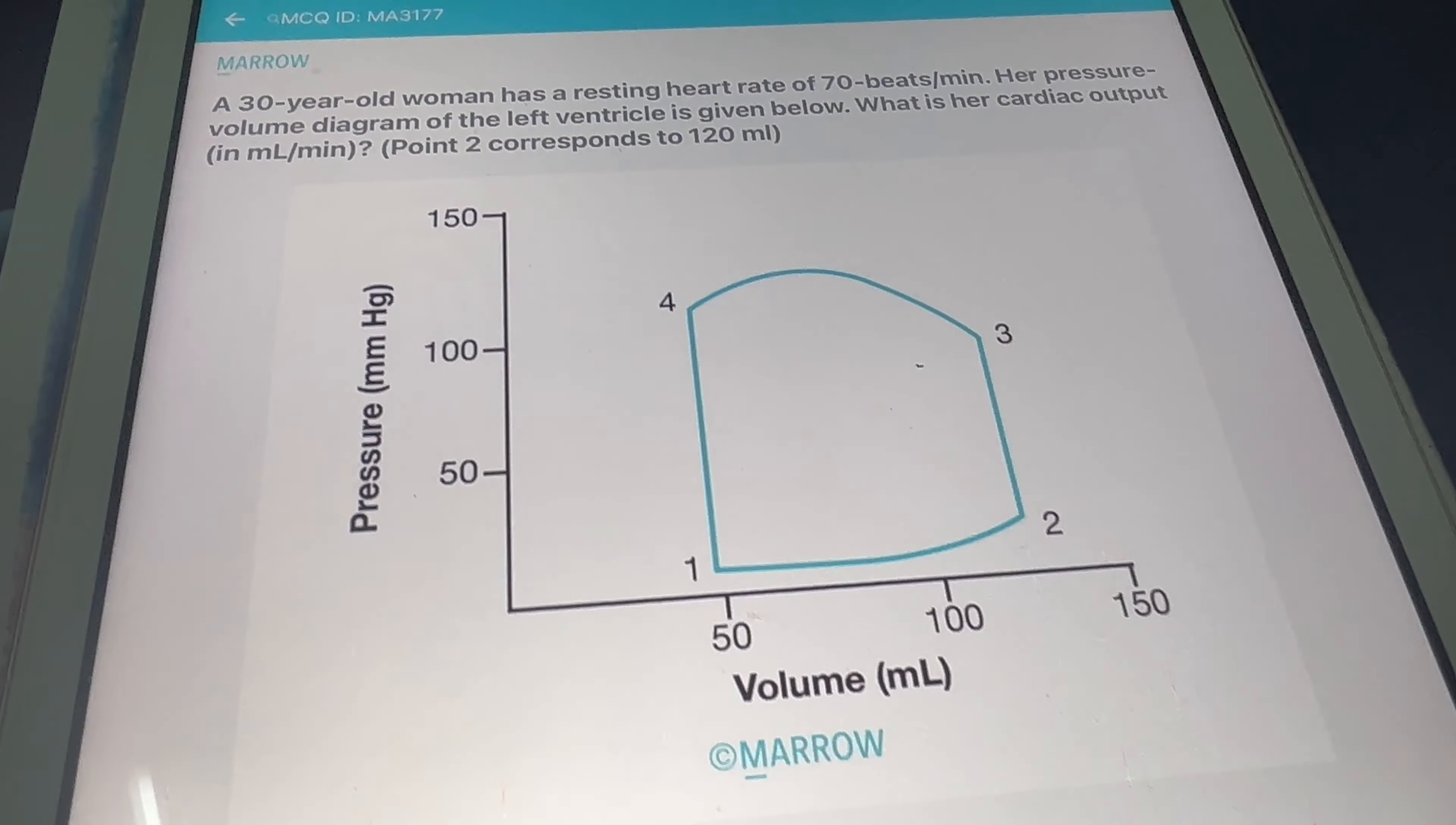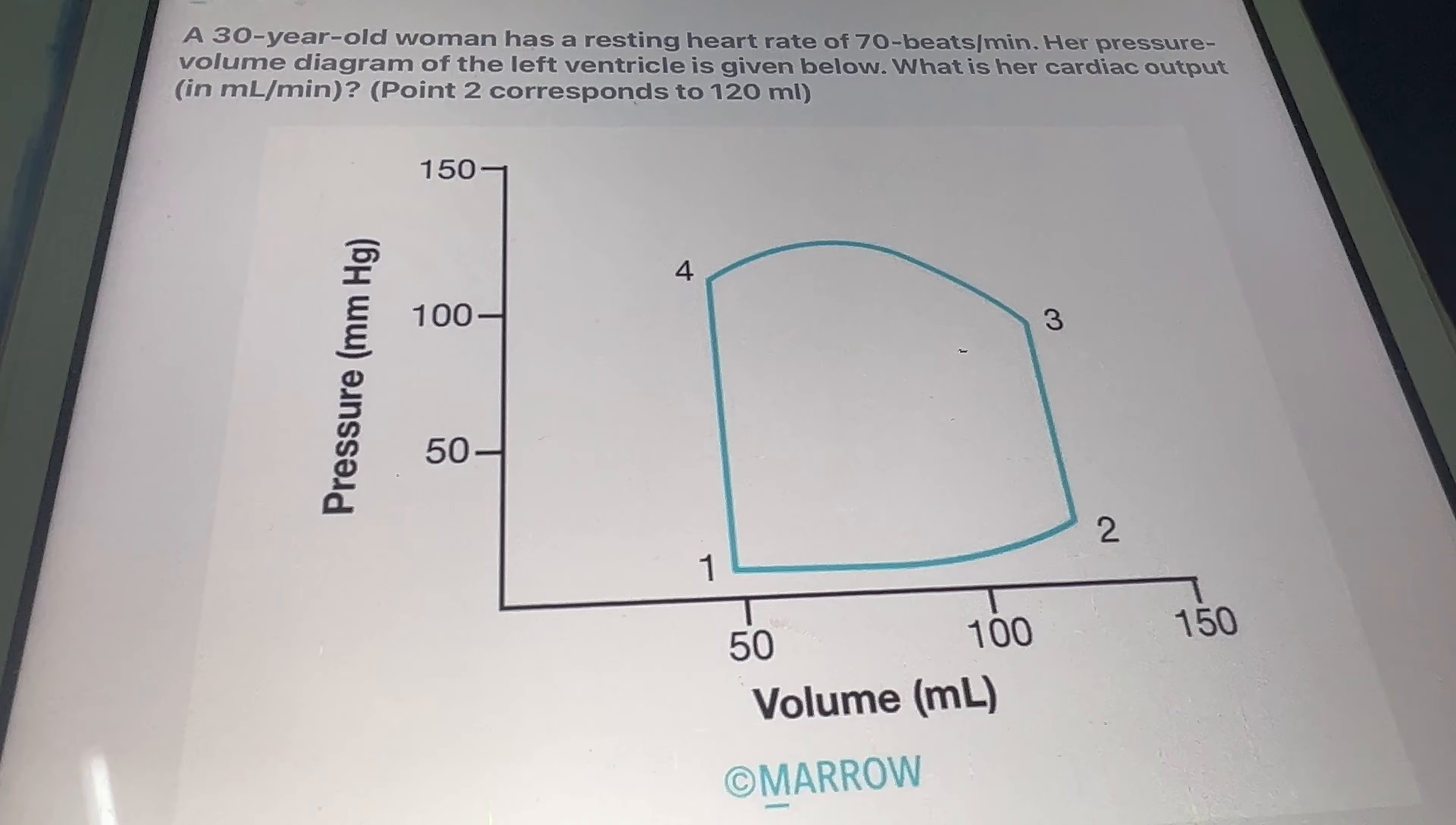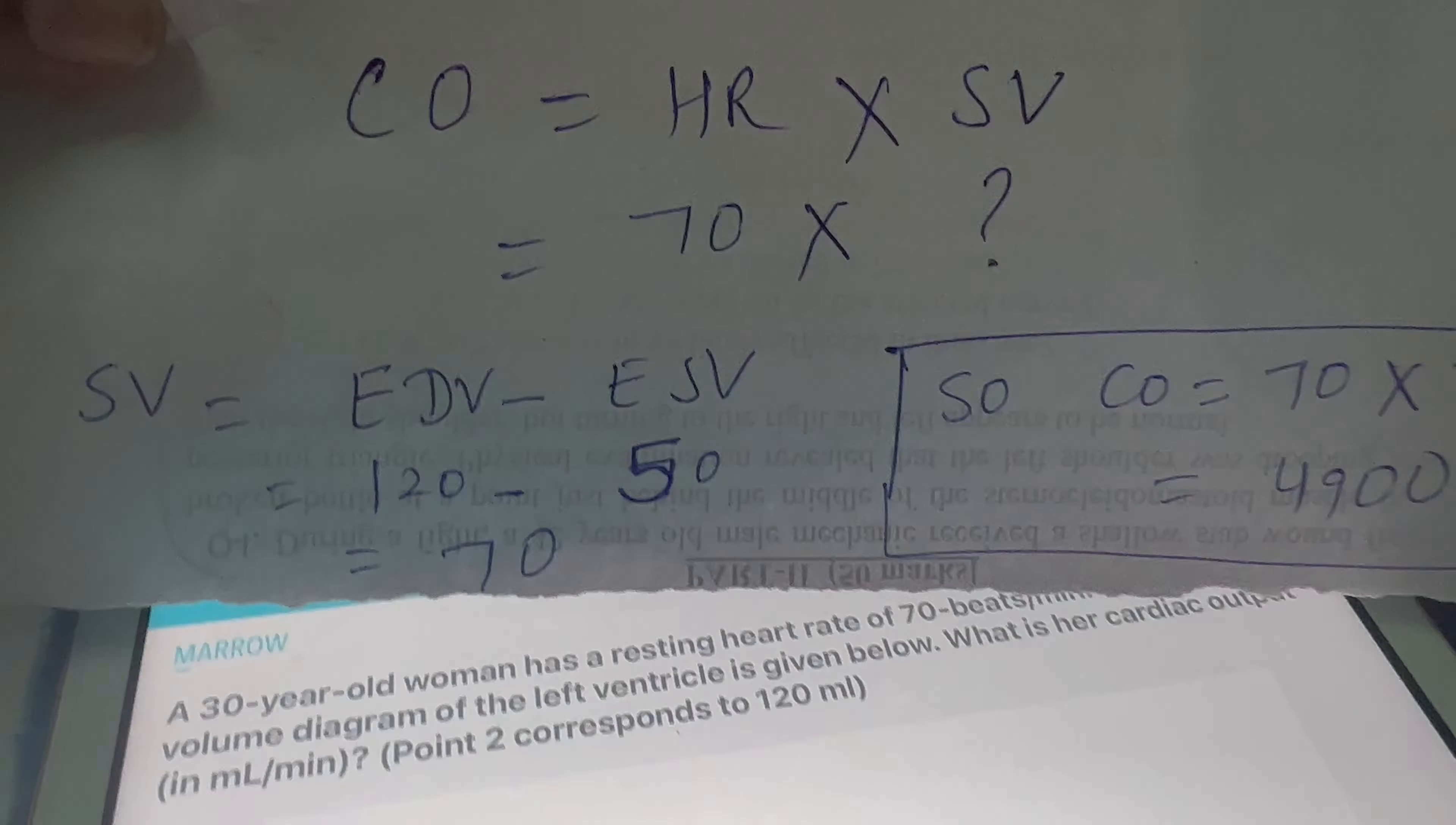Heart rate is given, but we have to calculate stroke volume. So how will we calculate stroke volume? First, we will calculate it using the end-diastolic volume and end-systolic volume.